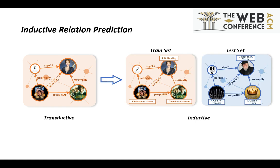However, in a real-world scenario, it often predicts the relation between two unseen entities during testing. So the embedding-based methods are not suitable for this situation, because we are required to retrain the whole model for unseen entities, and this requires the model to have inductive reliability.